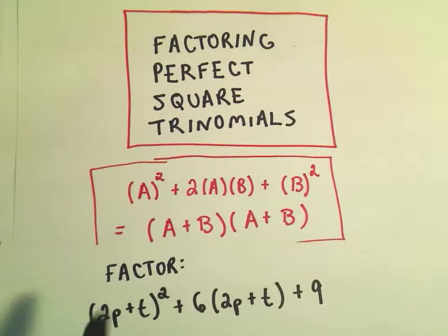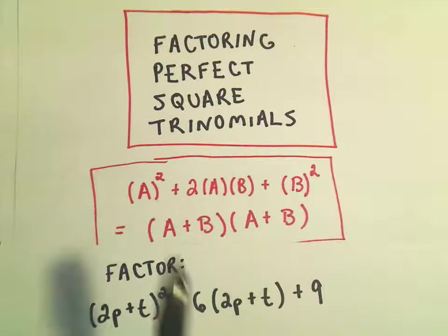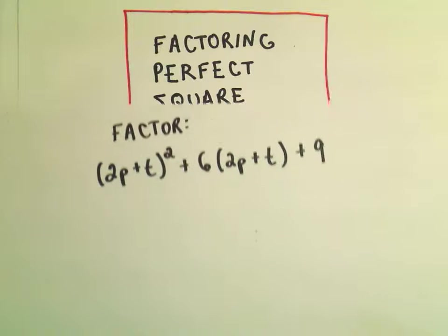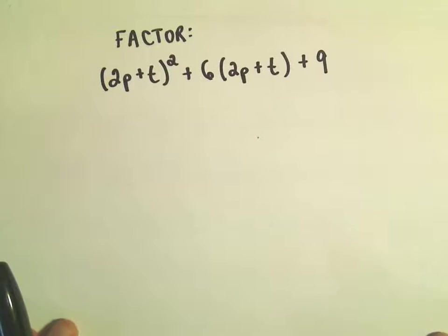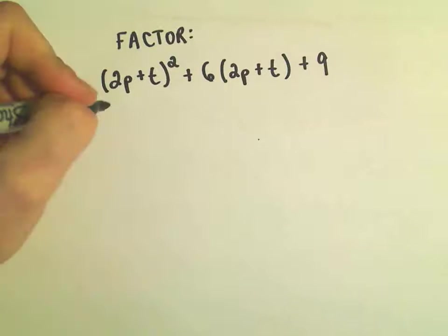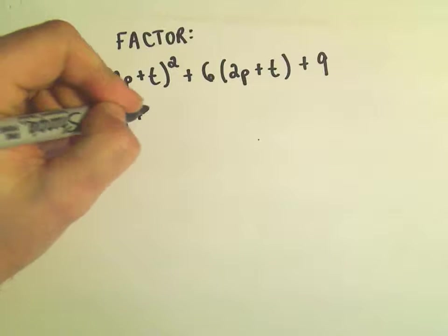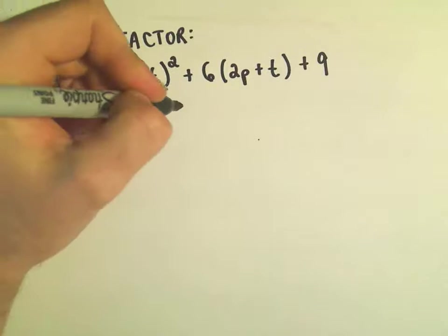I'm going to try to rewrite it in this form just to illustrate it, just to really emphasize that. So notice, 2p plus t squared, there that is.